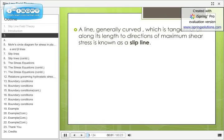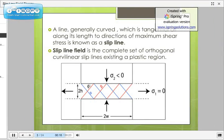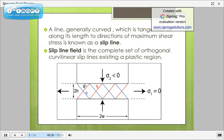Let us now define what is a Slipline. A line, generally curved, which is tangential all along its length to directions of maximum shear stress is known as a Slipline. Now what is a Slipline Field? Slipline Field is a complete set of orthogonal curvilinear slip lines existing in a plastic region. And this is a diagram showing Slipline Field model where alpha and beta are orthogonal field lines.